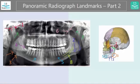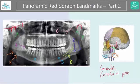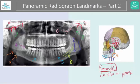Number one is this protruded, rounded part. This is either the condyle or the coronoid process — which one do you think it is? The answer is the condyle. The condyle is the area that rubs against the temporal bone; together they form the TMJ. This part towards the edges of the radiograph is the condyle, versus the coronoid process which is going to be towards more the midline.